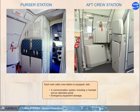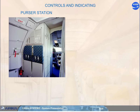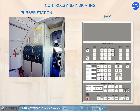Each main cabin crew station is equipped with a communication system including a handset and an attendant panel. The Forward Attendant Panel, FAP, is located at the purser station.